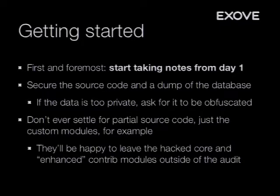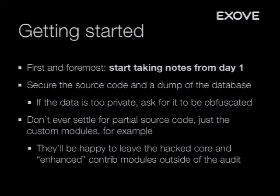Never settle for partial source code. A really typical thing I keep hearing is 'We'll just give you the custom modules' — that's not enough. You need all the modules, all the source code. There might be hacks in core, hacks in contrib modules, stuff in the wrong places, and really odd configurations in non-hacked core as well. I was once hit with this: we had a big customer who only gave us the custom modules, and when we finally got the whole site into our support, it had two cores running different versions side by side. Totally impossible to update.